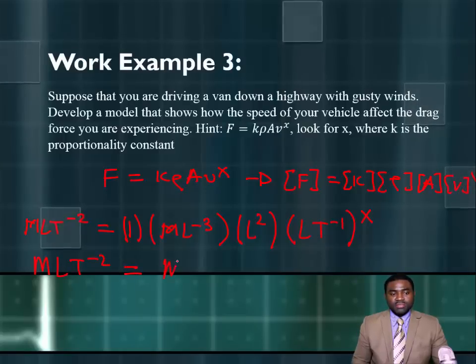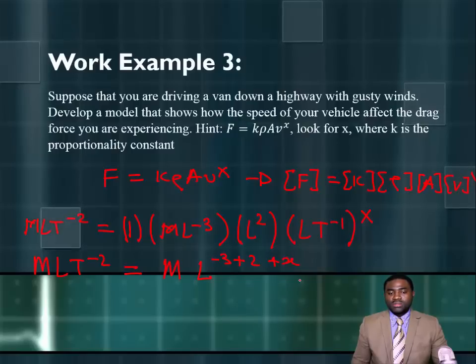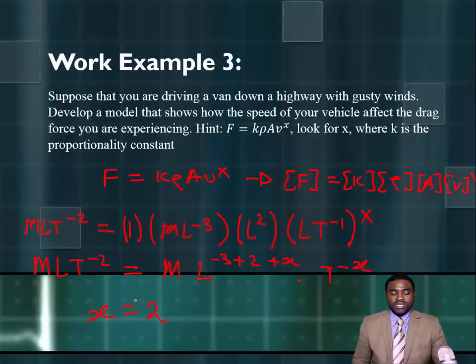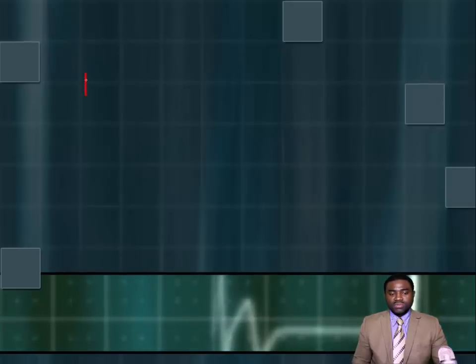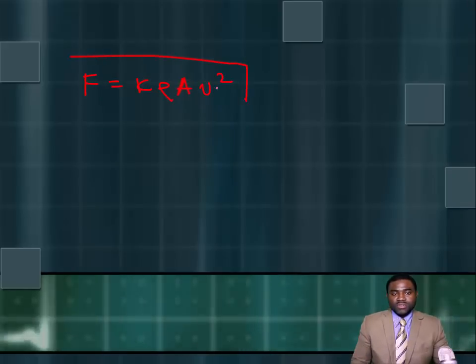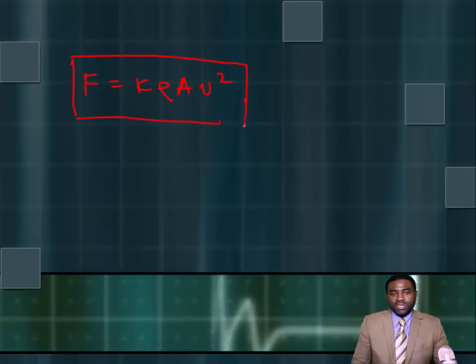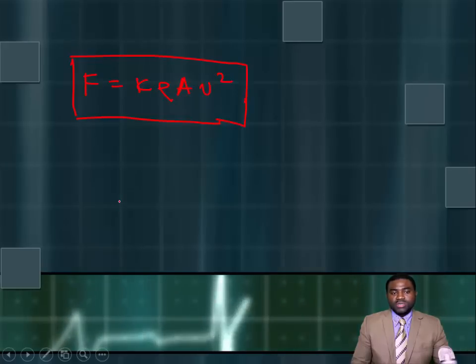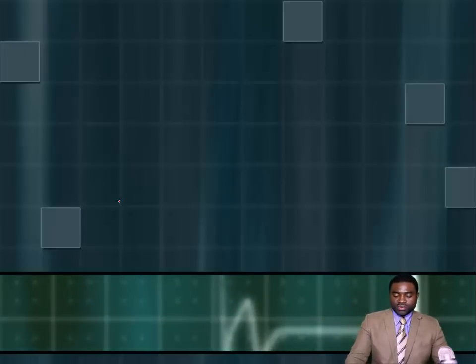Expanding the right-hand side: M L T minus 2 equals M times L to the (minus 3 plus 2 plus X), times T to the (minus X). Looking at this equation, you can automatically see that X equals 2. Therefore, the drag force you experience is equal to K rho A V squared. That is the drag force you will experience driving down a road in gusty winds.